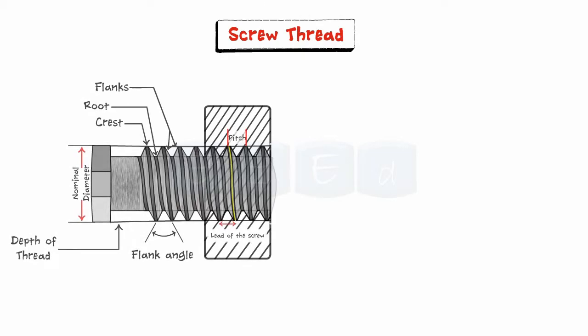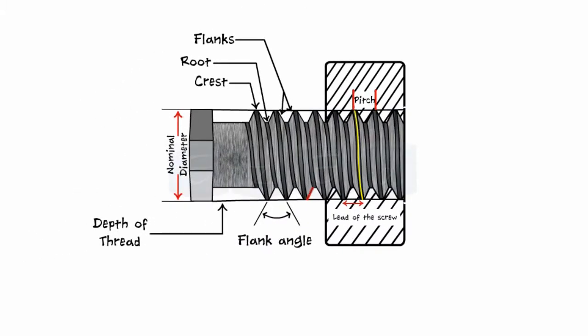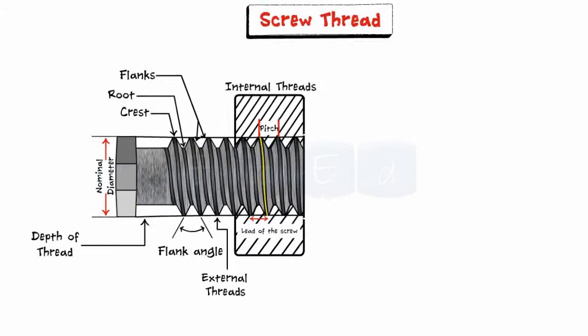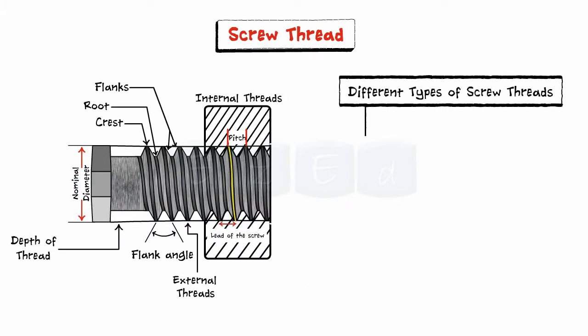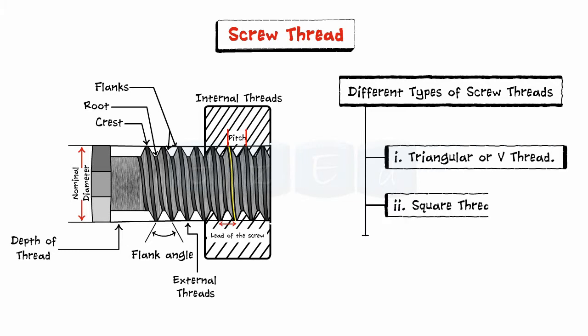Let us now see the different types of screw threads. When a thread is cut on the surface of the screw, then it is called external threading, whereas if a thread is cut in a hole, then it is called internal threading. The different types of screw threads can be classified as triangular or V thread, square thread. Now let us study them in detail.